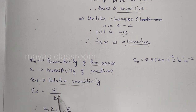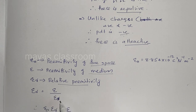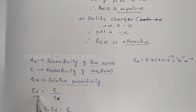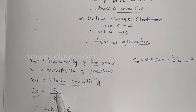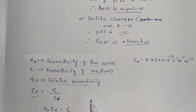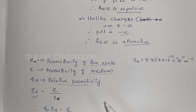The ratio of the permittivity of the medium to the permittivity of free space is called relative permittivity. That ratio — epsilon-r equals epsilon divided by epsilon-zero — is the relative permittivity.